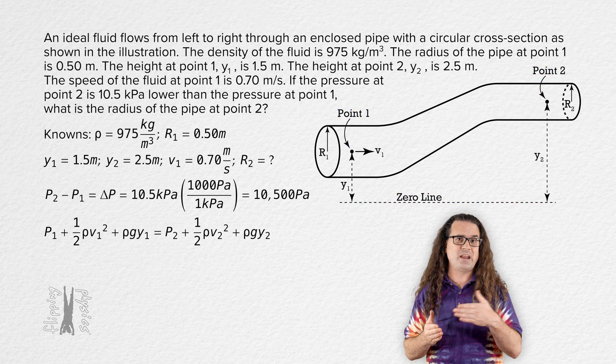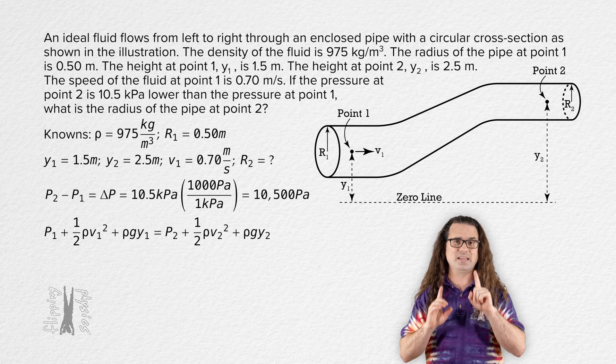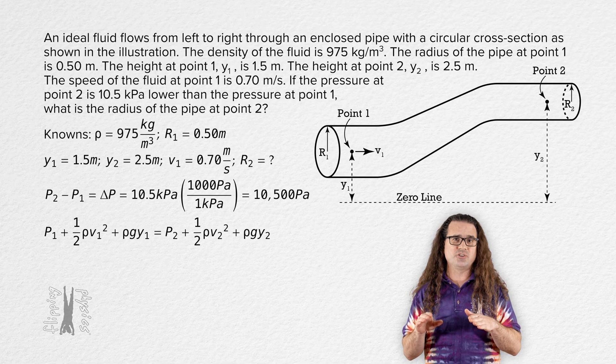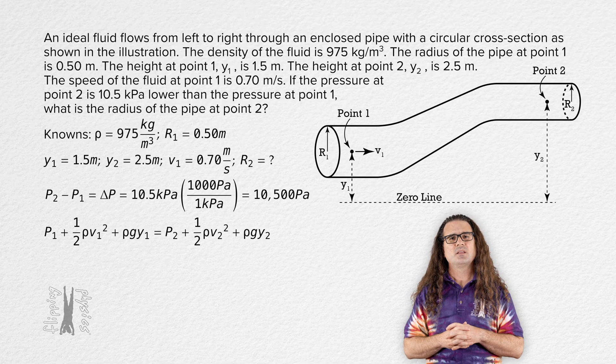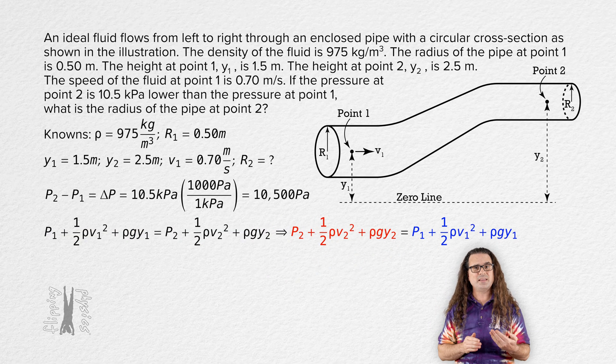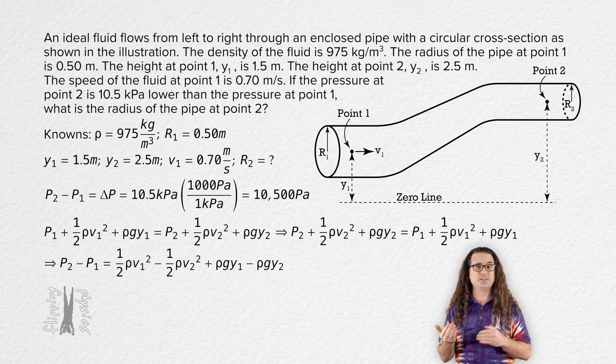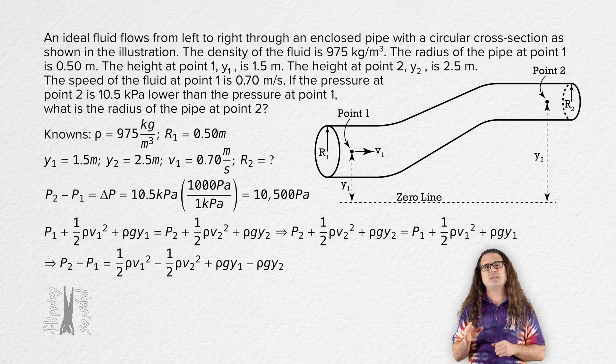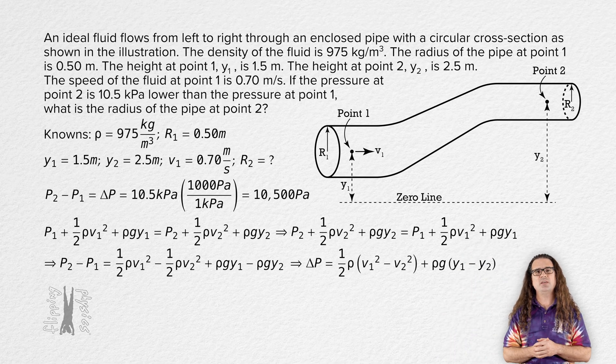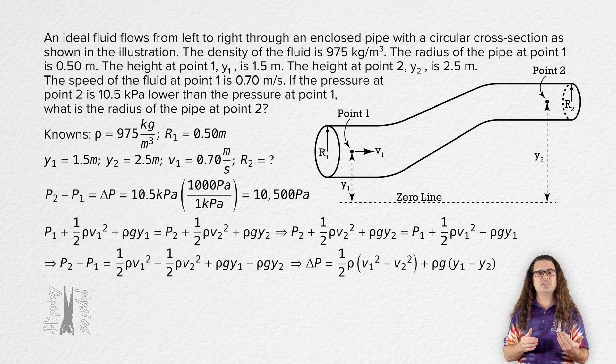The pressure at point 1 plus one half times the fluid density times the speed of the fluid at point 1 squared plus the fluid density times the gravitational field strength times the height at point 1 equals all of that again just changing the subscripts from 1 to 2. Let's start by switching the left and right hand sides of the equation. Now, all the 2's are on the left hand side of the equation and all of the 1's are on the right hand side of the equation. And now let's solve for the change in pressure. And then factor out like terms to get change in pressure equals one half fluid density times the quantity speed at point 1 squared minus speed at point 2 squared, that quantity plus fluid density times gravitational field strength times the quantity vertical height at point 1 minus vertical height at point 2.